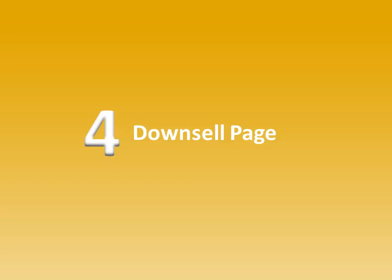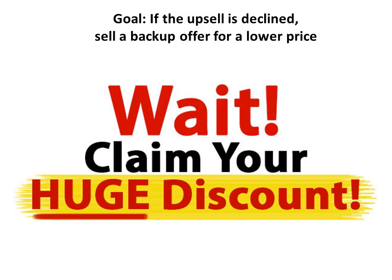If they say no to the main offer or the upsell, there's still a way to avoid leaving money on the table — that is showing them a downsell page. A downsell page shows them an offer at a lower price than the upsell, essentially saying: you don't want to spend this much? What if I could get it to you for less, or a version that's not as good for a lower cost? A percentage of people will take you up on that, so it's really leaving money on the table to let people go away when they're right about to make a purchase.